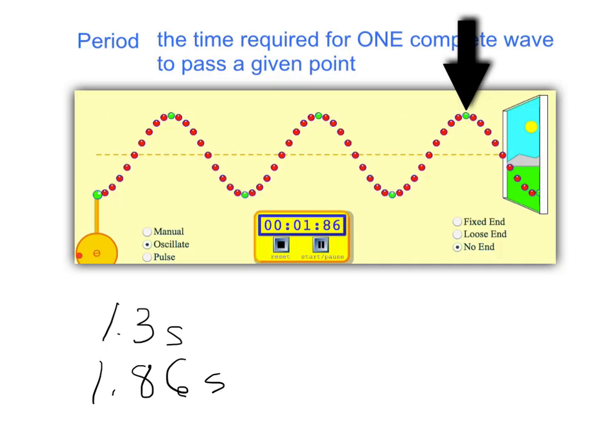So if it took from 1.3 seconds to 1.86 seconds for one wave to go by, that's a difference of 0.56 seconds. So we would say 0.56 seconds is the period or the time for one wave to go by.